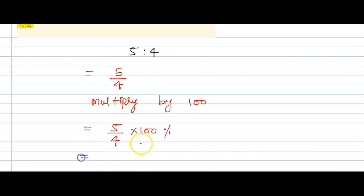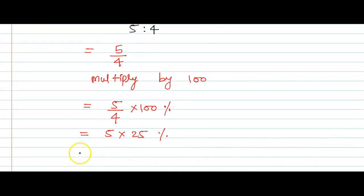Now we will simplify. Here 100 with 4 cancels out, that is 25 times. So 5 into 25 percent. 5 into 25 is 125, so this is the required percentage, 125 percent.